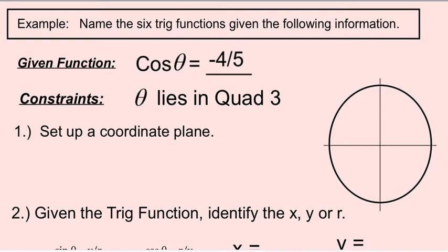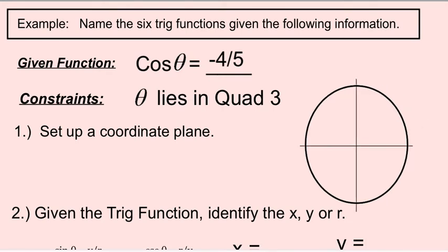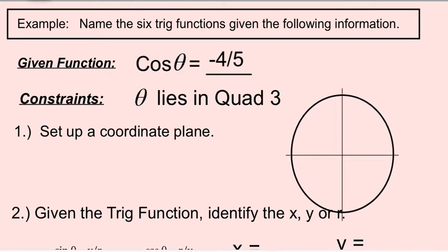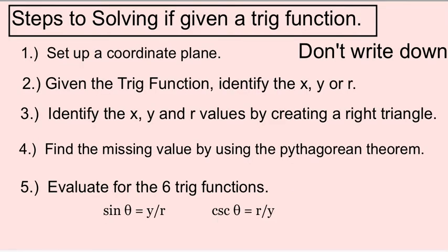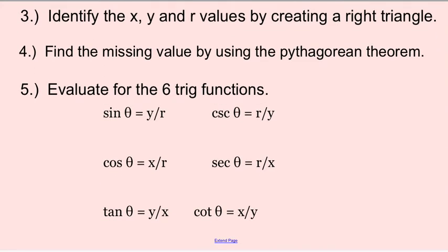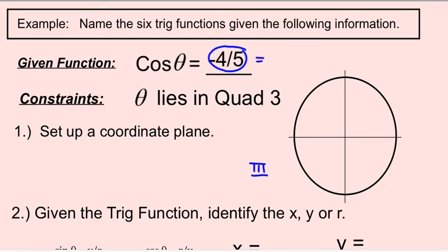So we want to first set up a coordinate plane. I have my circle here, and my angle falls in quadrant three, down here. I'm going to create a right triangle, and I have this negative four-fifths. The cosine of the angle is negative four-fifths, and cosine is x over r. So this represents x divided by r. Now we can create our x value of negative four and our r value of five.